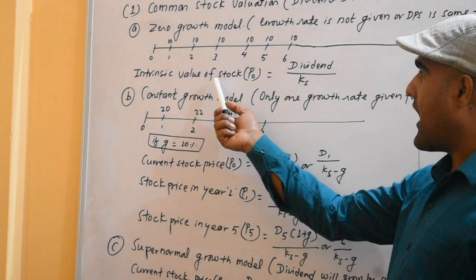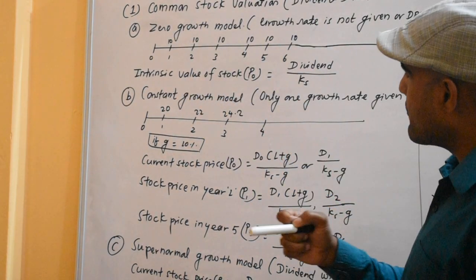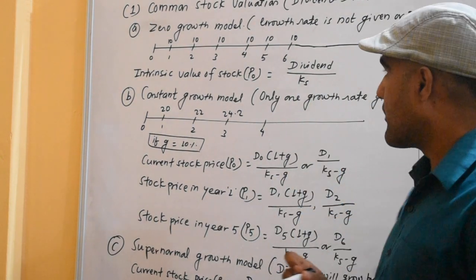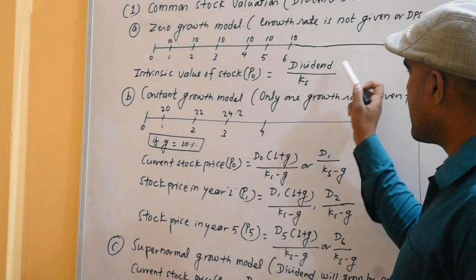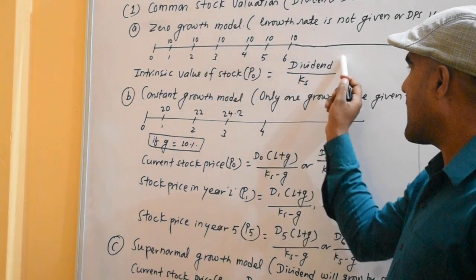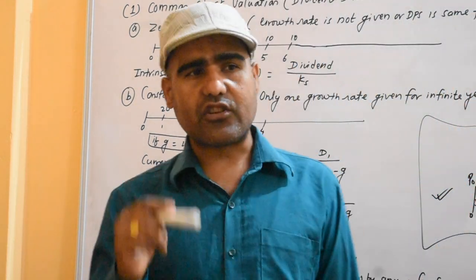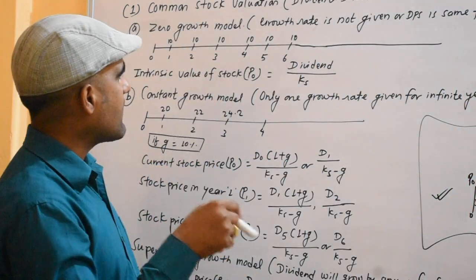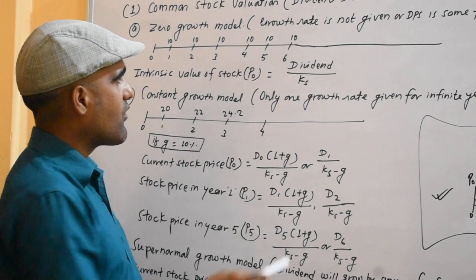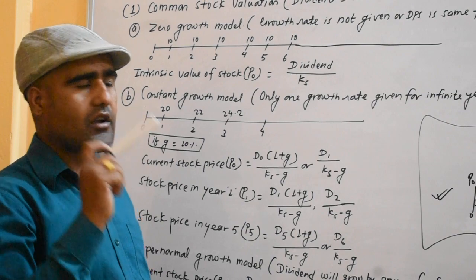You can see the intrinsic value of the current selling price, or you can see the stock value of the stock price. You can see the dividend of KS — the dividend portion of KS is the required rate of return. The minimum rate of return is applied to the common stock.